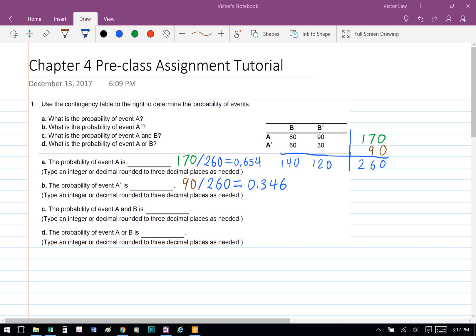For part A, the probability of event A is A divided by the total, which is 170 divided by 260, which equals 0.654.